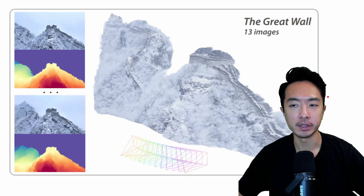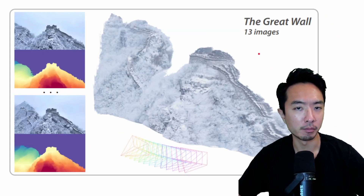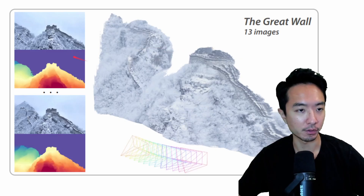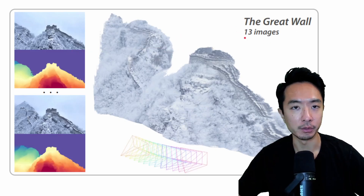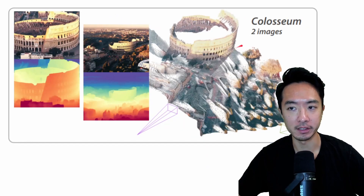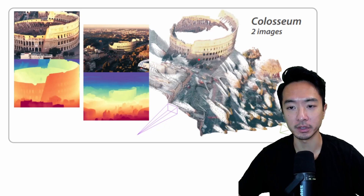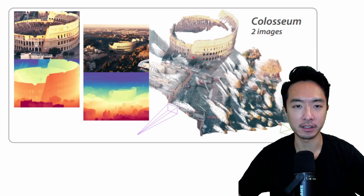Another thing to point out is that some of these results don't require many images to do the 3D reconstruction. For this example, this is a Great Wall 3D reconstruction which only used 13 images, and this right here is a Colosseum using only two images. So with very few images, it's able to get quite impressive results. Let's go ahead and take a look at some more interactive demos.